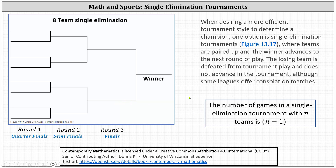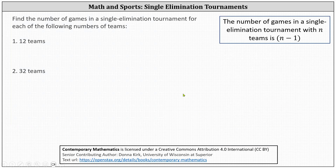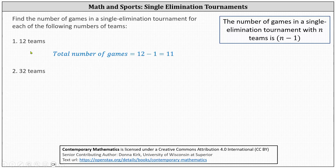For two more quick examples: if the tournament is a single elimination style tournament and there are 12 teams, n equals 12, and therefore there's a total of 11 games. If there are 32 teams, there's a total of 31 games. Thank you for watching.